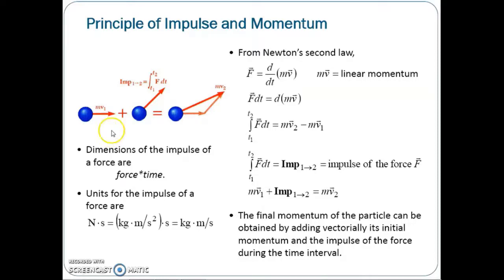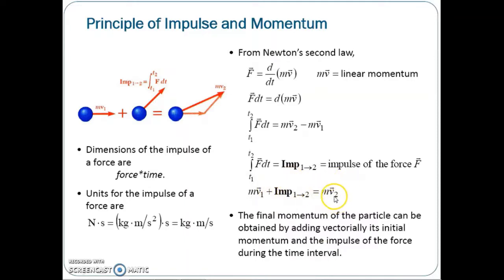Transposing terms, we obtain MV1 plus the impulse from time 1 to time 2 equals MV2. This can be defined as: the final momentum of the particle can be obtained by adding vectorially its initial momentum and the impulse of the force during the time interval. The dimensions of the impulse of a force are force multiplied by time, and the units are Newton-seconds or kg·m/s.